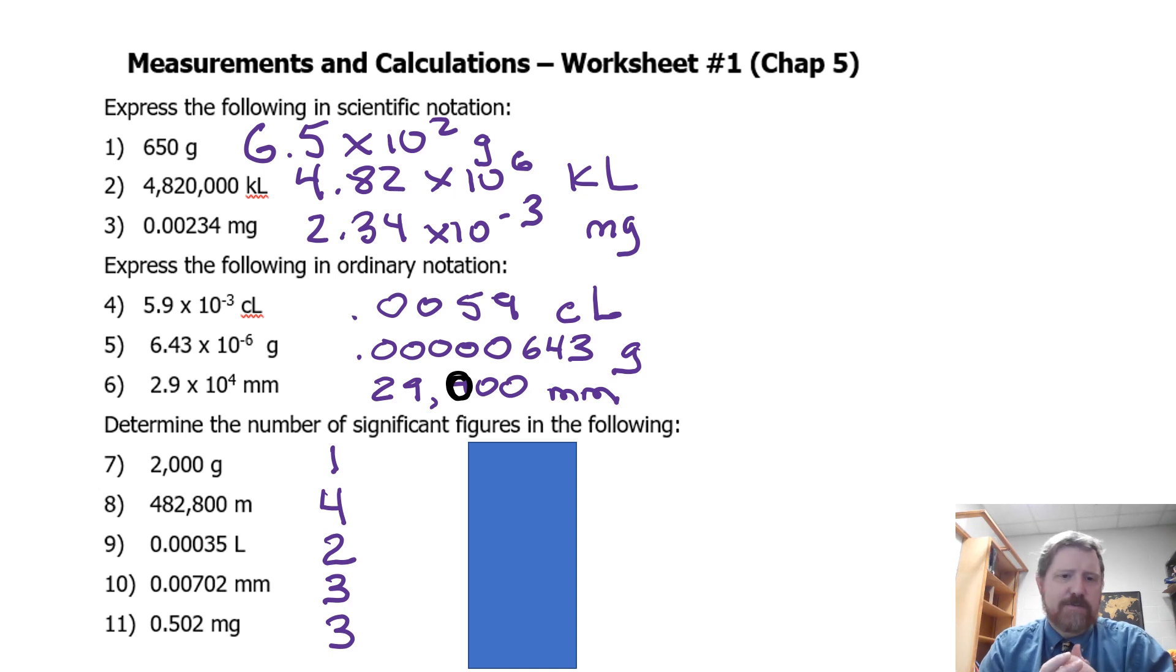So the first three questions are about scientific notation. Remember we're only supposed to have one number and then the decimal, so you see like 6.5 in the first answer, 4.8, and 2.3. One number, decimal, and then the rest of the numbers.